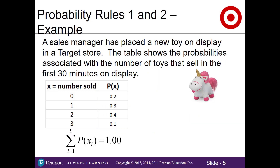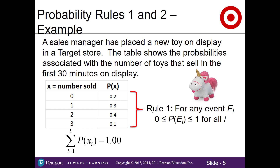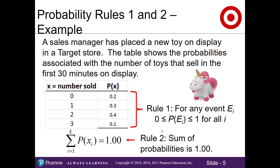Let's see how probability rules 1 and 2 go together. A sales manager has placed a new toy on display in a Target store. The table shows the probabilities associated with the number of toys that sell in the first 30 minutes, where x is the number of toys sold and p(x) is the probability. For instance, there is a 0.2 probability that 0 toys will be sold. Each probability is between 0 and 1 per rule 1, and adding all probabilities together equals 1, satisfying rule 2.